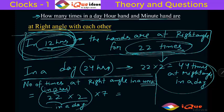So it is 22 into 2 is 44, 44 into 7. So it is 4 7s are 28, so it is 308 times.